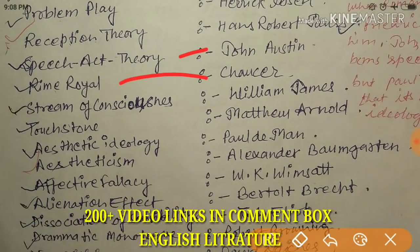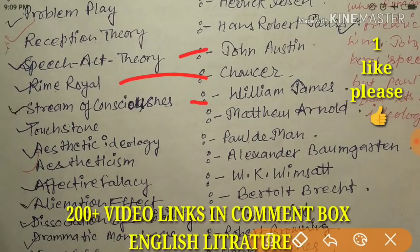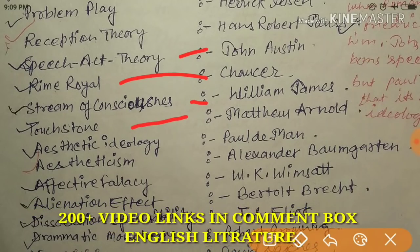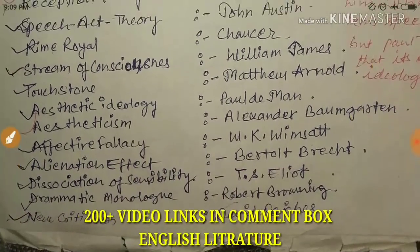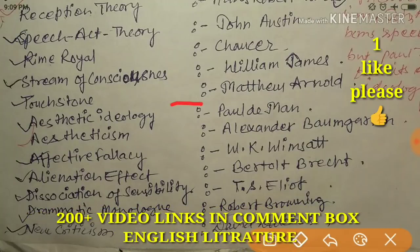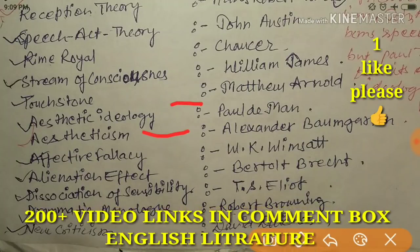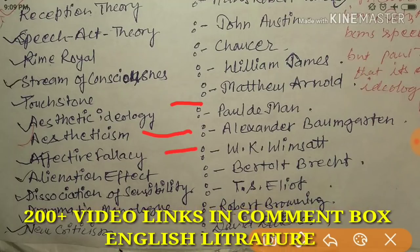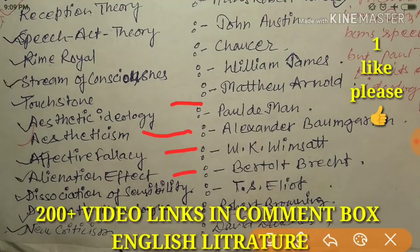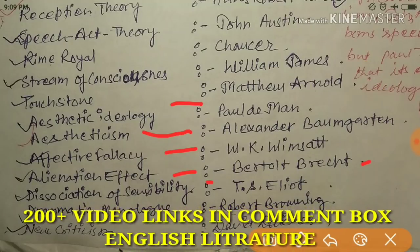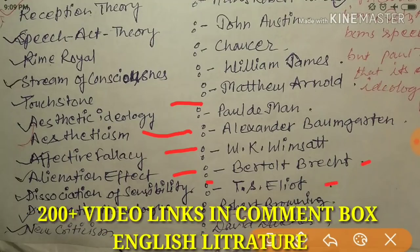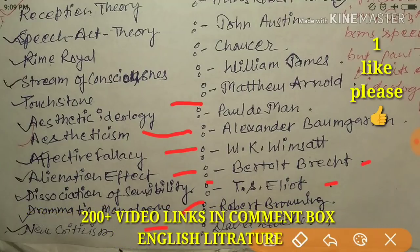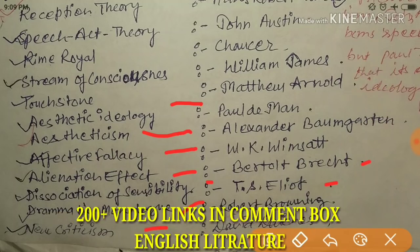'Rhyme Royal' was introduced by Chaucer. 'Stream of Consciousness' is by William James. 'Touchstone' is by Matthew Arnold. 'Aesthetic Ideology' is by Paul de Man. 'Aestheticism' is by Alexander Baumgarten. 'Affective Fallacy' is by W.K. Wimsatt. 'Alienation Effect' is by Bertolt Brecht. 'Dissociation of Sensibility' is by T.S. Eliot. 'Dramatic Monologue' is by Robert Browning. 'New Criticism' is by David Daiches.